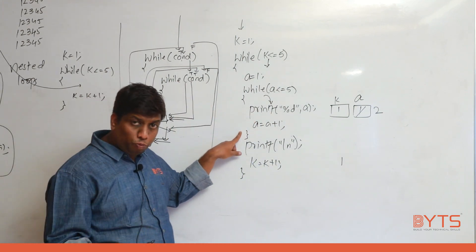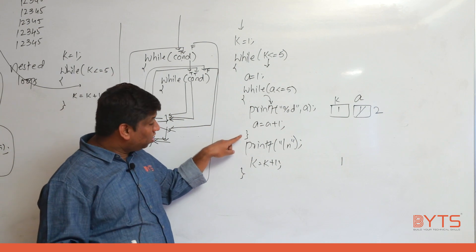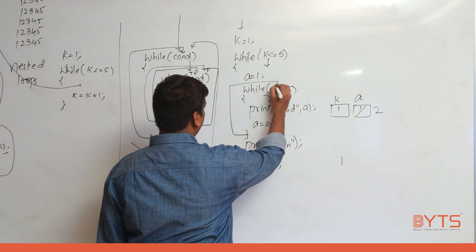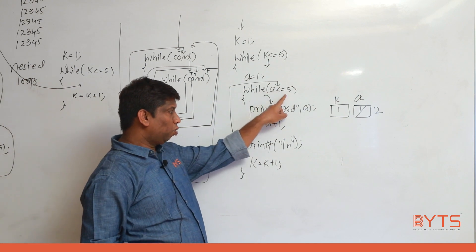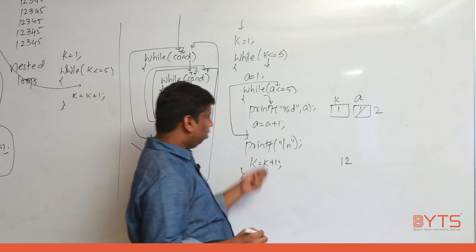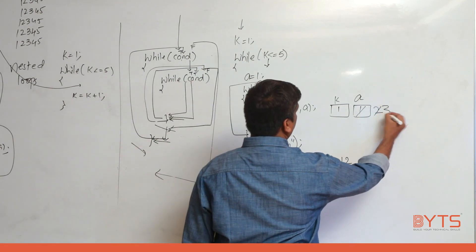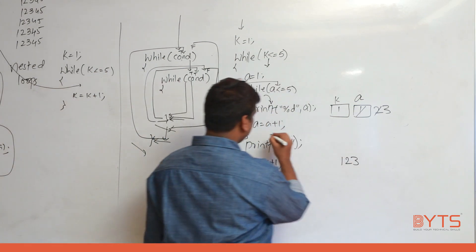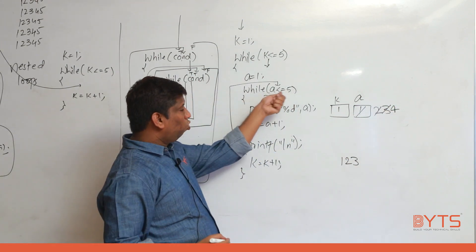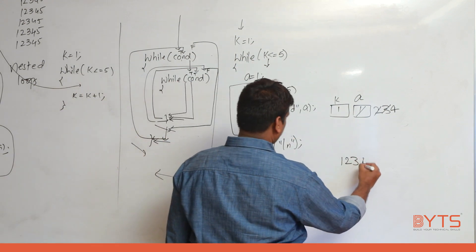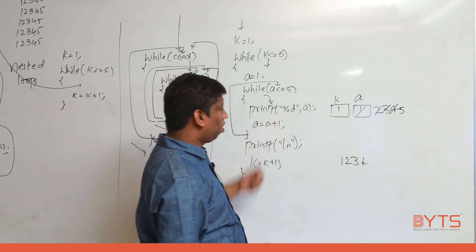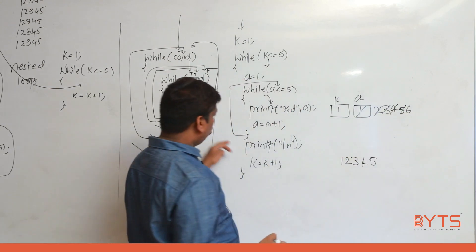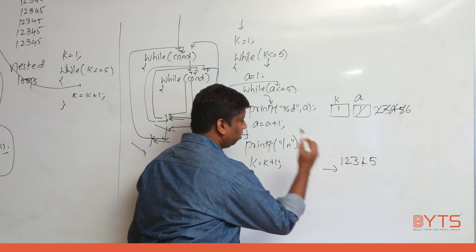At end of inner loop, k = 1, a = 2. Back to inner condition: 2 <= 5, true — print 2, a becomes 3. Then 3 <= 5 — print 3, a = 4. Then 4 <= 5 — print 4, a = 5. Then 5 <= 5 — print 5, a = 6. Then 6 <= 5 is false, so control comes to printf("\n") — new line.